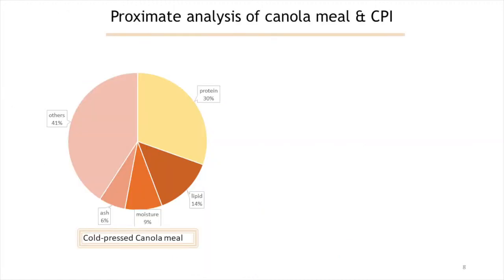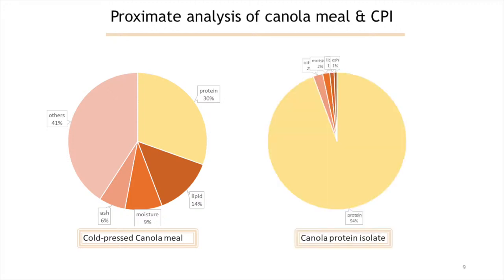This chart shows the proximal analysis of the cold-pressed canola meal, kindly donated by Pleasant Valley Oil Meals in Alberta. The canola meal contains about 30% protein, 40% lipids, 9% moisture, 6% ash, and the rest, approximately 41%, is presumably carbohydrate. After salt extraction, the canola protein isolate comprised 94% protein with a 6.24 conversion factor from the microcolour analysis.